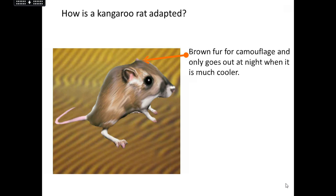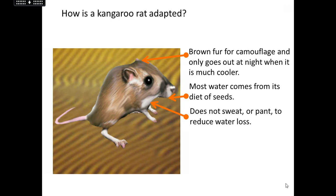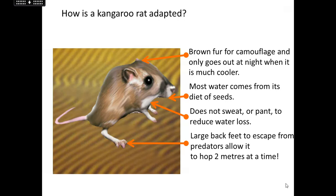The kangaroo rat also lives in the desert. It's brown — just like the camel — so it's got that camouflage, and it tends to only go out at night when it's much cooler, avoiding direct sunlight by being nocturnal. Most of its water comes from seeds — it doesn't need to find fresh water sources anywhere. The seeds provide all the water it needs, and a lot of our water also comes from food rather than drinks. Similar to the camel, it doesn't sweat much and doesn't urinate much either, doing everything it can to reduce water loss.